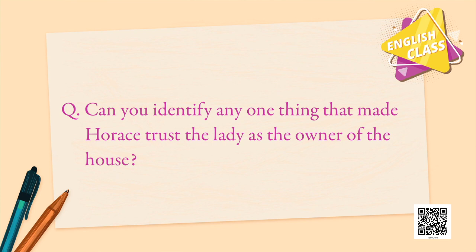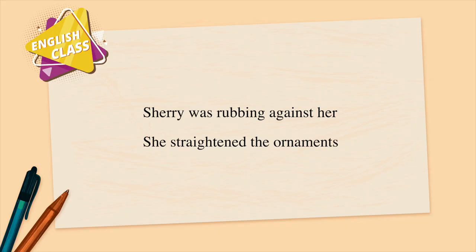There are a few things that help us understand why Horace trusted the lady. Here are some alternatives — you can choose any one. First, Sherry was rubbing against her. Second, she straightened the ornaments there. Third, she picks up the cigarette and lights it. All three are correct.